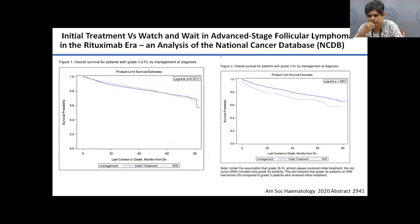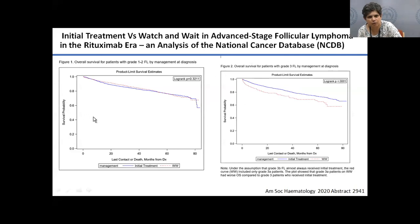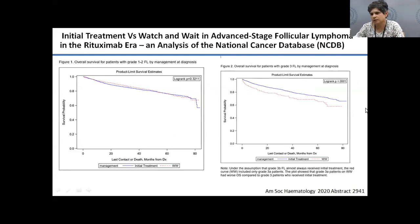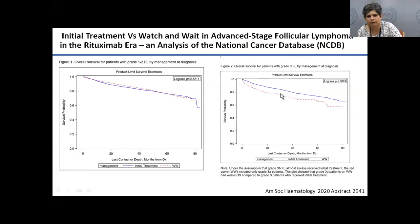A recent large database publication confirms that even today with new therapies and monoclonal antibodies, there is no difference in outcomes for follicular lymphoma patients treated at diagnosis versus those on watch-and-wait. However, in grade 3 follicular lymphoma — which borders on the DLBCL spectrum — there is a difference whether treatment is started at diagnosis or when the patient becomes symptomatic. Maintenance rituximab for two years after R-CHOP increases overall survival and is standard in follicular lymphoma, unlike DLBCL.